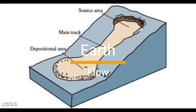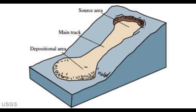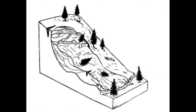Earthflow is a type of slow-moving landslide that involves the gradual downhill movement of soil and rock material along a curved surface. It typically occurs in areas with moderate slopes and saturated soils, and can be triggered by heavy rainfall or changes in groundwater levels. Earthflows can be particularly dangerous as they can cause significant damage to infrastructure and property and pose a risk to human life. They can also lead to the loss of soil and vegetation, which can have long-term environmental impacts.